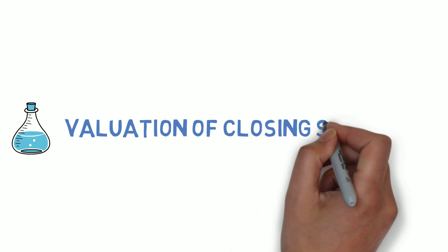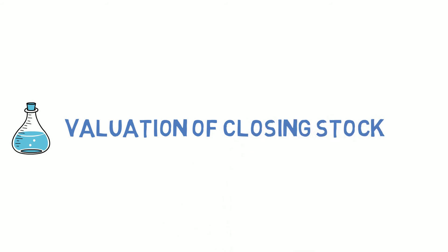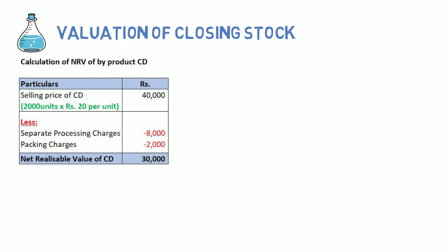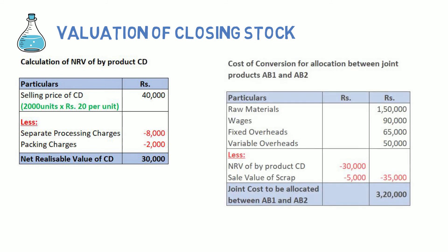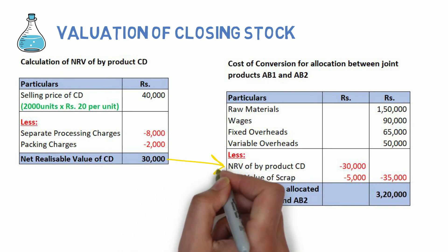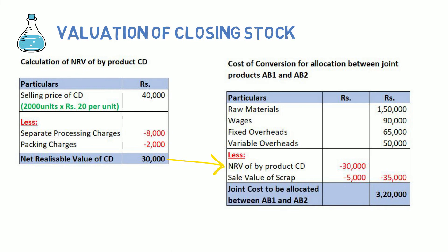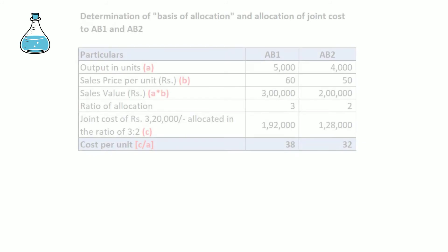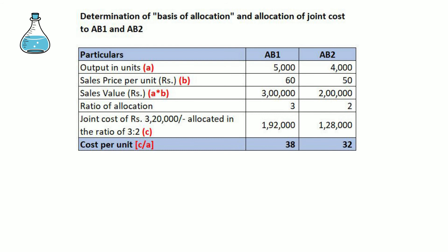Let's look at how closing stock is valued in this case. First, we calculate the NRV of the by-product by deducting separate processing and packing charges from the sale value. Once we have the NRV, we determine the cost of conversion for allocating between the joint products by deducting the NRV of the by-product. Once the cost of conversion is computed, we determine the basis of allocation and allocate the joint cost of 3,20,000 rupees between AB1 and AB2.